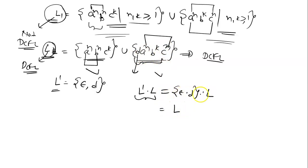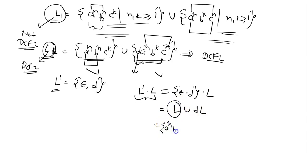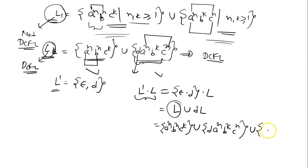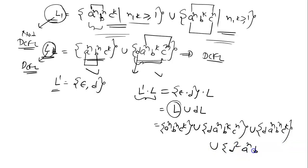When you compute L' · L, you get L union d·L. The language L is: a^n b^n c^k union d a^n b^k c^n. And d·L means concatenating d with L, giving: d a^n b^n c^k union d² a^n b^k c^n.